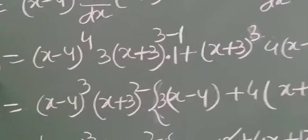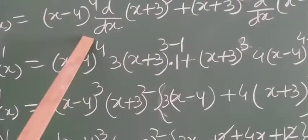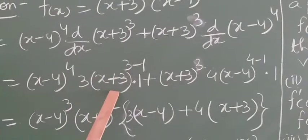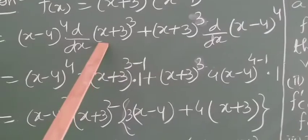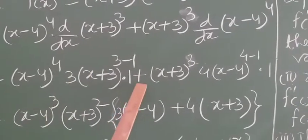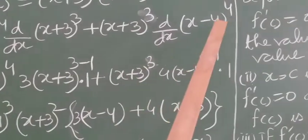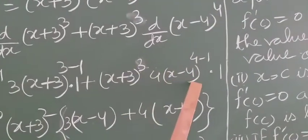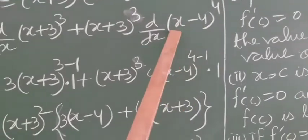So f'(x) equals (x−4)⁴ · its derivative 3(x+3)², and then we find the derivative of (x+3), which is 1, plus (x+3)³ remains as it is, its derivative 4(x−4)³, and the inside derivative is 1.